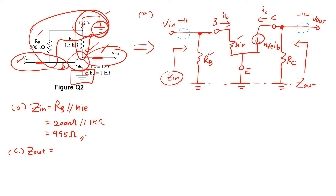For part C, we are supposed to find the output impedance. This is where our output impedance is — it's pointing towards RC first, and behind RC there's actually a current source H-ie. A current source does not give any resistance, so it won't contribute any resistance to Z-out. Therefore, Z-out is simply RC, and the answer for Z-out is just 1.5k, the value of RC.